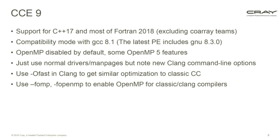The environment is compatible with GCC 8.1 and provides GCC 8.3 as the actual compiler you can use. OpenMP is disabled by default in the C compilers but the OpenMP implementation has been improved, supporting OpenMP 4.5 and some OpenMP 5 features. You use the normal drivers and man pages but you'll see different command line options. For example, the OpenMP flag changed from -fomp to -fopenmp for the Clang-based compiler, so Makefiles would need updating.